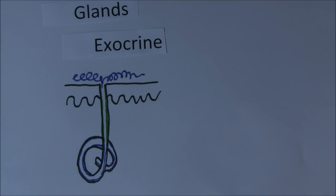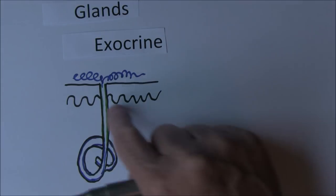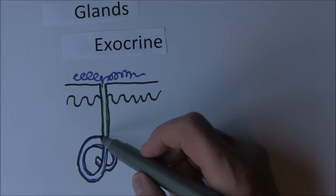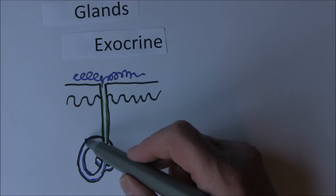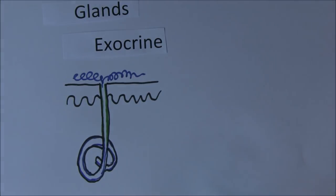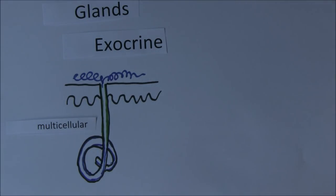The sweat gland is a relatively macroscopic structure — small, but made of many cells. Lining it are many individual secretory cells, so that's an example of a multicellular exocrine gland. But others are just a single cell.